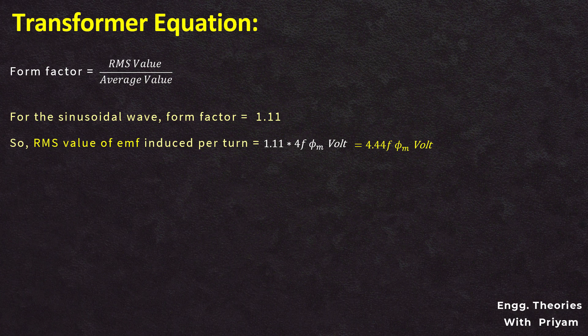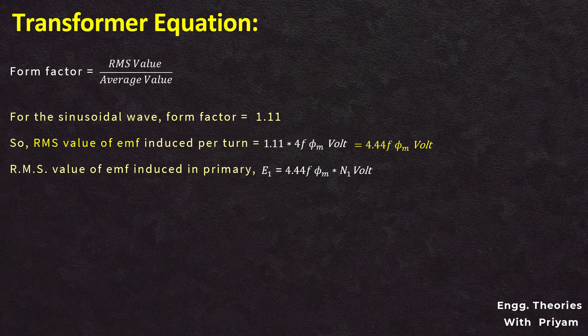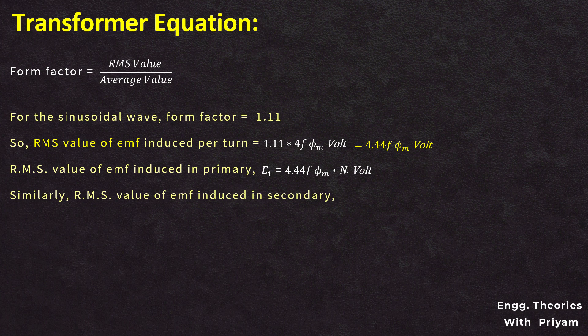Since the primary and secondary have N1 and N2 number of turns respectively, the RMS value of the induced EMF in the primary, E1, equals the induced EMF per turn multiplied by the number of turns in the primary winding. So E1 equals 4.44 × F × φm × N1, which gives 4.44N1Fφm. Similarly, the RMS value of the induced EMF in the secondary, E2, equals 4.44N2Fφm.